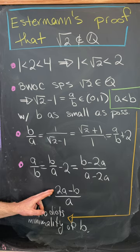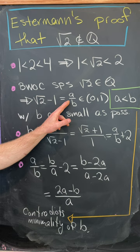Oh but look, we've got a smaller denominator than we started with that contradicts the minimality of b.